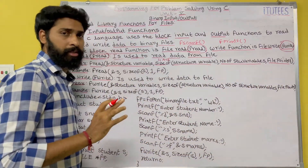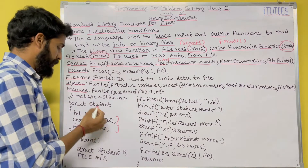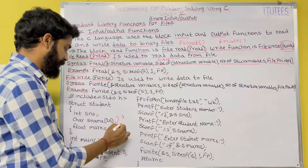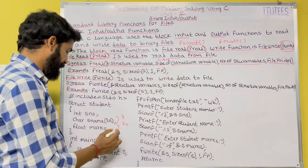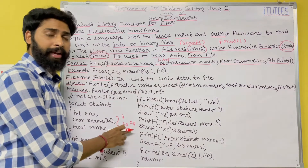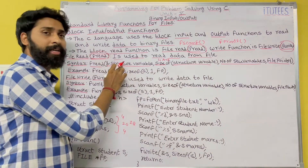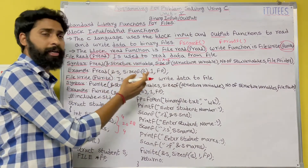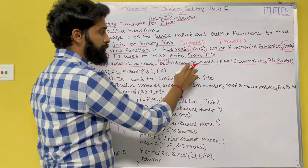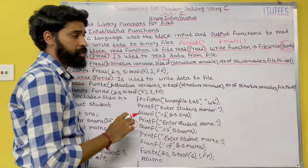For example, consider a structure that contains three data values: student number, student name, and marks. The integer occupies 4 bytes, the character array name occupies 20 bytes, and float marks occupies 4 bytes. That means the total size is 28 bytes of memory allocated for one structure variable. The first argument is the address of the structure variable, and the second argument is the size of the structure variable, which is 28 bytes indicating 28 bytes of memory.